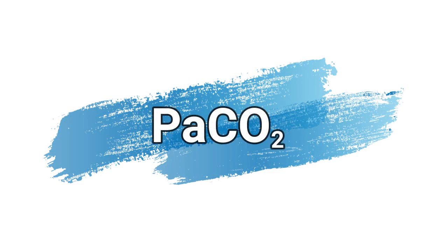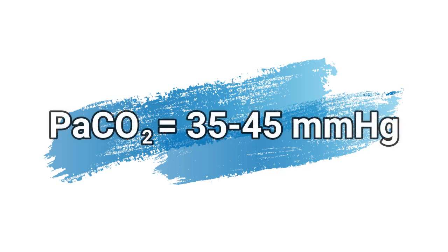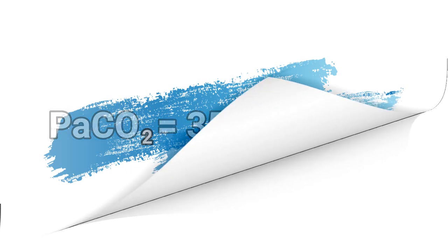Per PaCO2 si intende la pressione parziale di anidride carbonica. Essa varia in base alla funzione polmonare. Il valore della PaCO2 nel sangue arterioso si assesta tra i 35 e i 45 mmHg. Valori inferiori ai range di riferimento delineano un quadro di ipocapnia, mentre valori superiori determinano un quadro di ipercapnia.